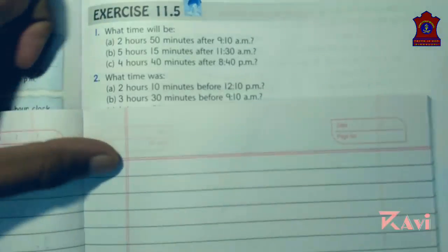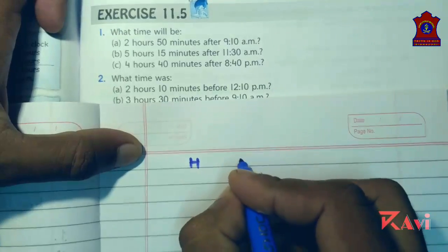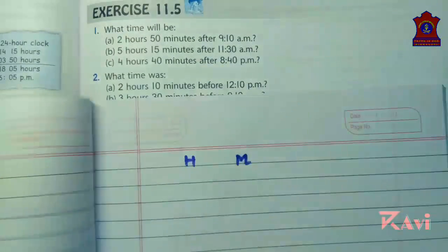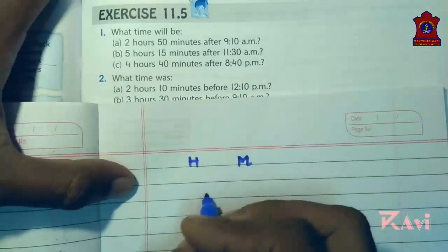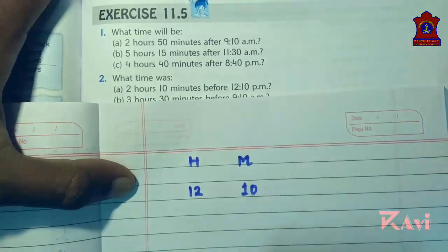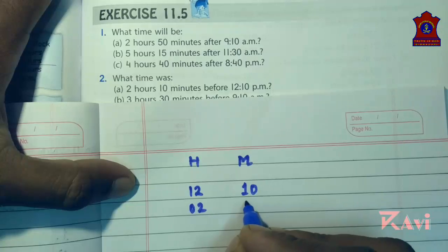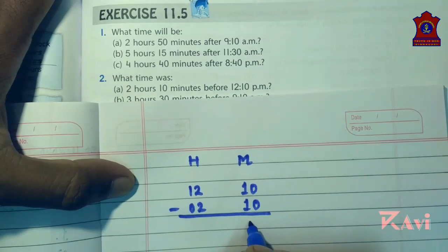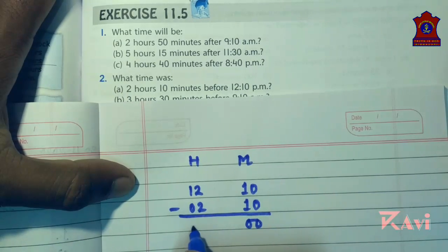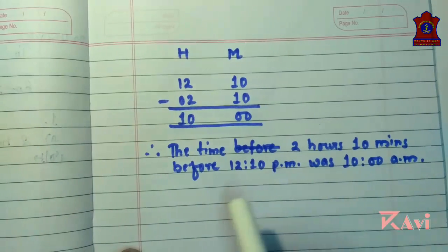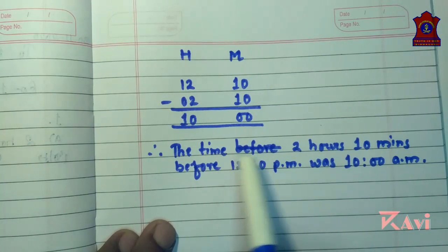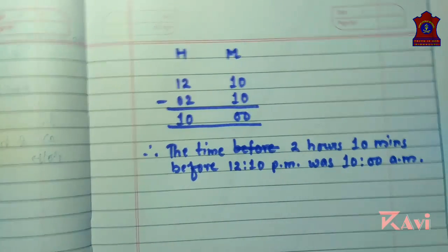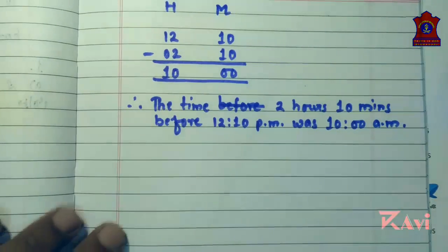Do the same — create hours and minutes columns. Subtract 2 hours 10 minutes from 12:10. So 10 minus 10 is 0, and 12 minus 2 is 10. It is simple subtraction. Therefore, the time 2 hours 10 minutes before 12:10 p.m. was 10 a.m.